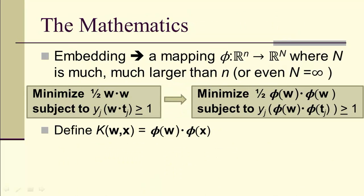Now let's introduce our embedding. That's a mapping, phi from R^n to R^N, where the capital N is much, much larger than n. And in many instances, we'll just let capital N be infinity, although we won't get into what it means to have an infinite dimensional vector space.